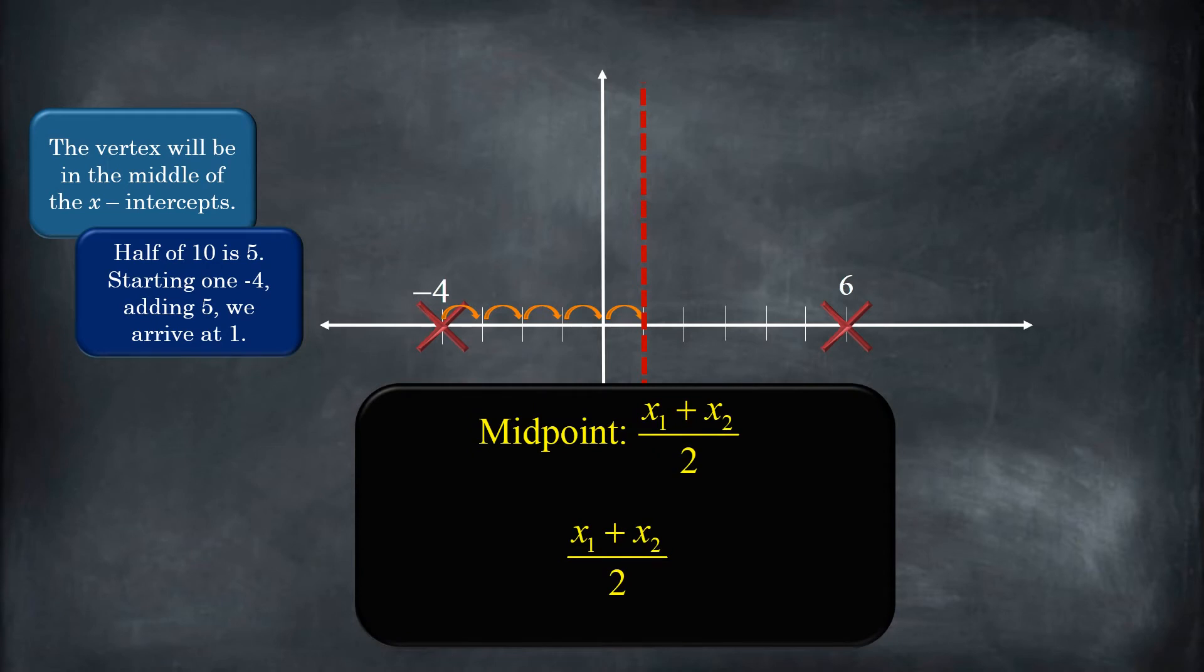Now, you don't have to count every time. In fact, sometimes it would be really impossible, especially if you have irrational solutions. It's going to be super hard to count that halfway distance, but we're in luck. There's a formula, the midpoint formula: x1 plus x2 divided by 2.